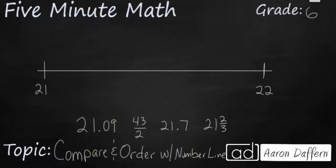Hello and welcome to 5-Minute Math. Today we are looking at the 6th grade concept of comparing and ordering numbers using a number line, and we will do it in 5 minutes or less. So you see we have just a part of a number line here running from 21 to 22.